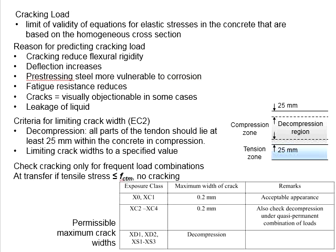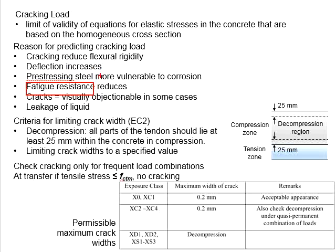Also, cracking exposes the reinforcement bar and tendons to moisture and the environment. The pre-stressing steels are vulnerable to corrosion. Cracking also reduces the fatigue resistance of the member. Fatigue resistance refers to the condition where the member is subjected to loading and unloading continuously for millions of times.